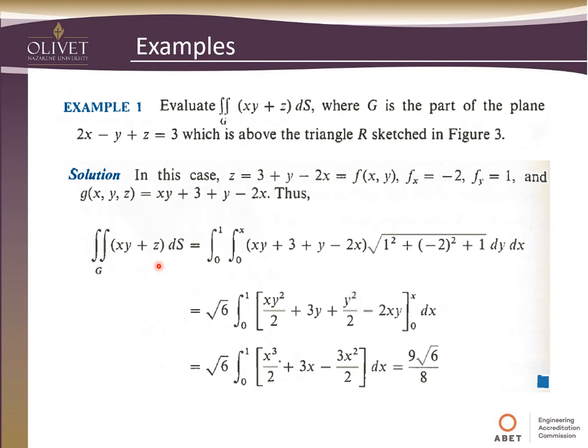So now we can rewrite this then as the original integral is going to be the integral from 0 to 1 and then 0 to x. Because we have that slant, right? So your y is going from 0 to x of xy plus 3 plus y minus 2x, which was our redefined G. And then our change of variables coefficient. And so now if we simplify terms and get this down as just a simple integral, we integrate by parts and plug in the values and we should come up with 9 times the square root of 6 over 8.